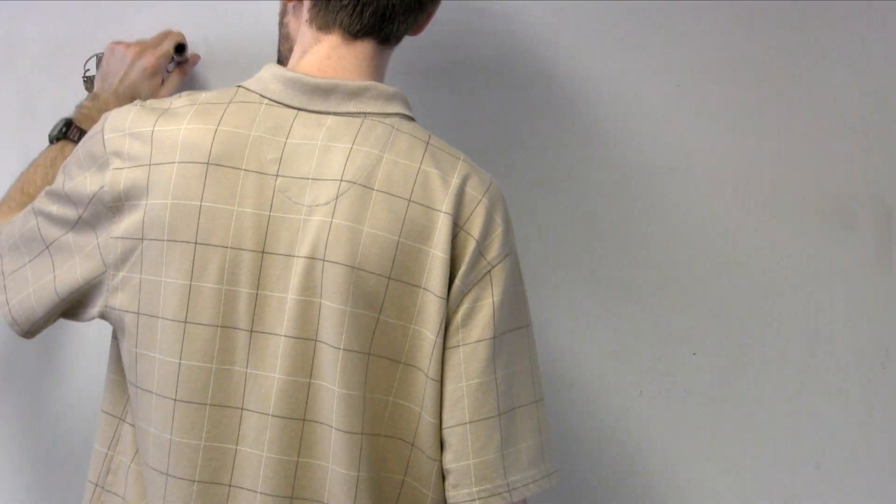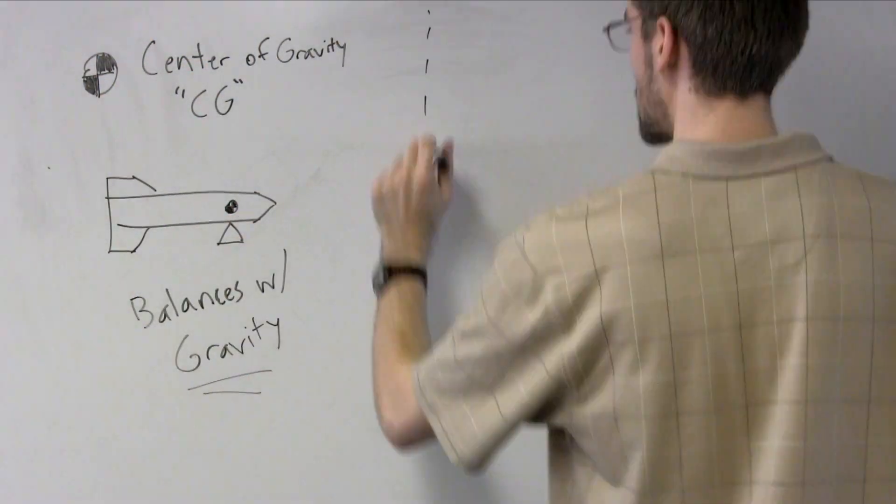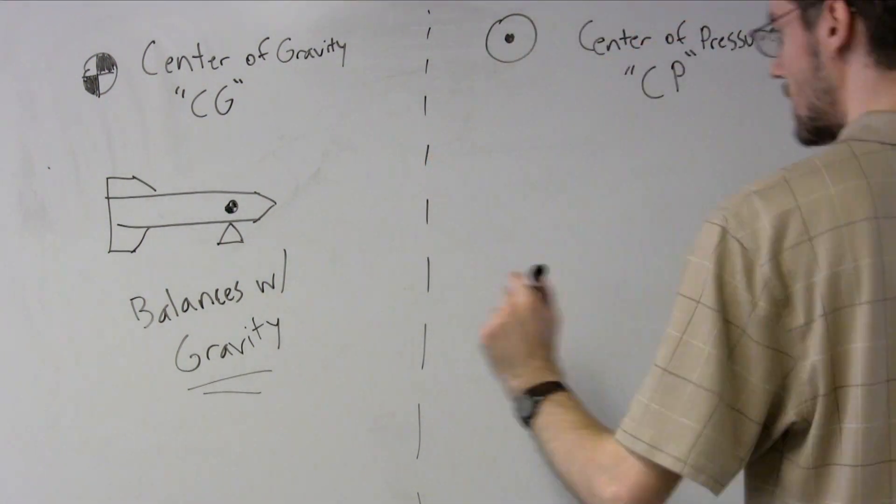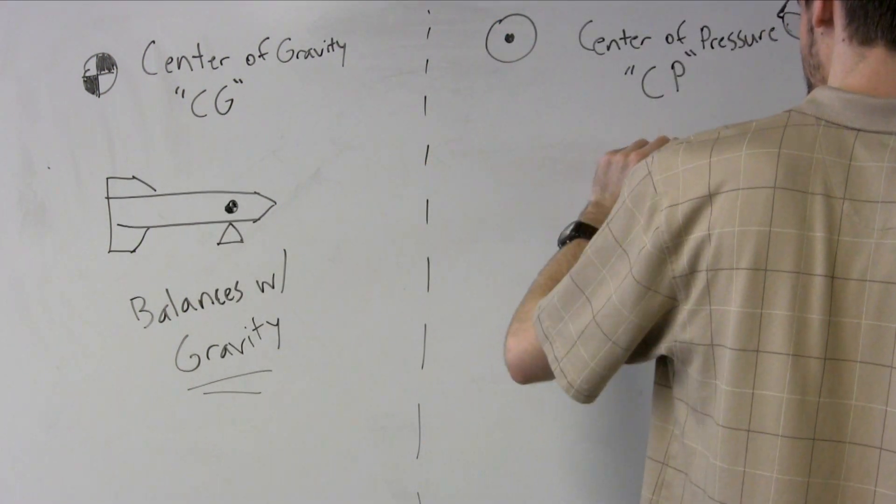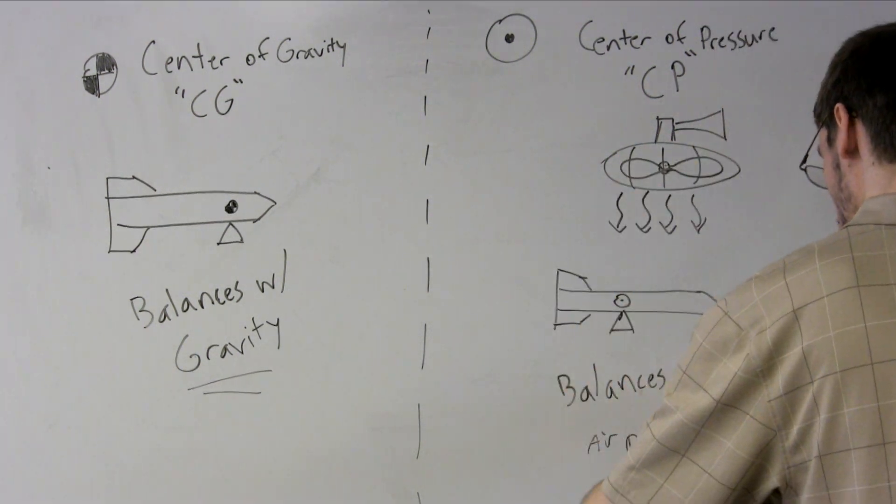It's a bit like the center of gravity, or CG, in that it is a balance point, but it depends on forces from air pressure as opposed to gravity. This also means that its position depends on the direction of airflow, but it stays mostly in the same place for simple rockets which are thin and symmetrical.